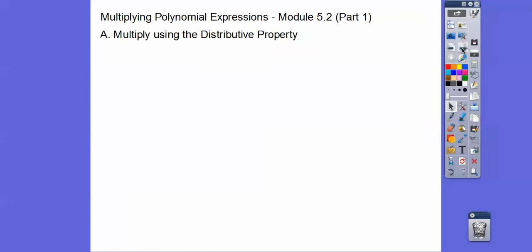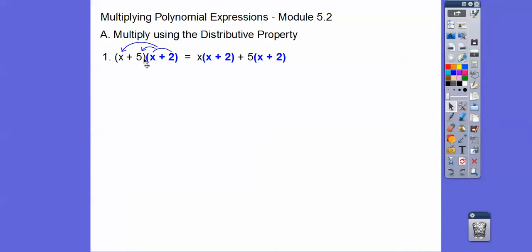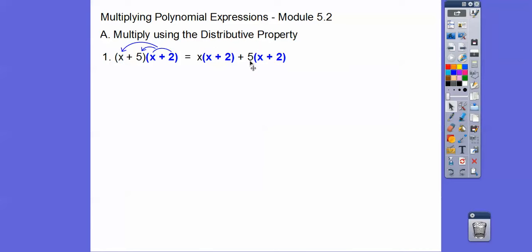So let's multiply using the distributive property. Here we're going to distribute the x plus 2 through the parentheses — distribute this whole quantity through. So it's going to be times x and then times 5. Now we're going to take each one of these and distribute the x through the blue guy and distribute the 5 through the blue guy.